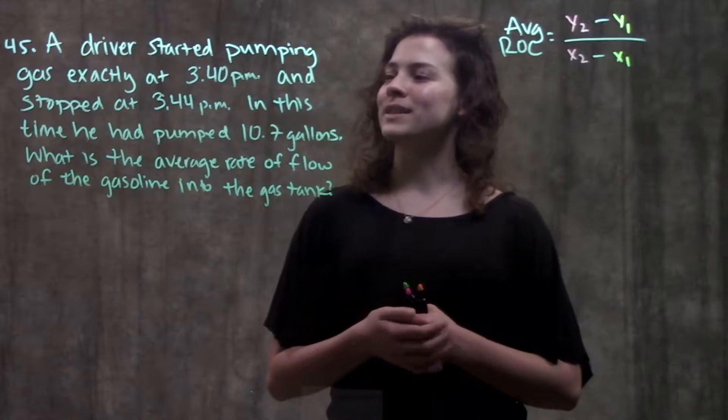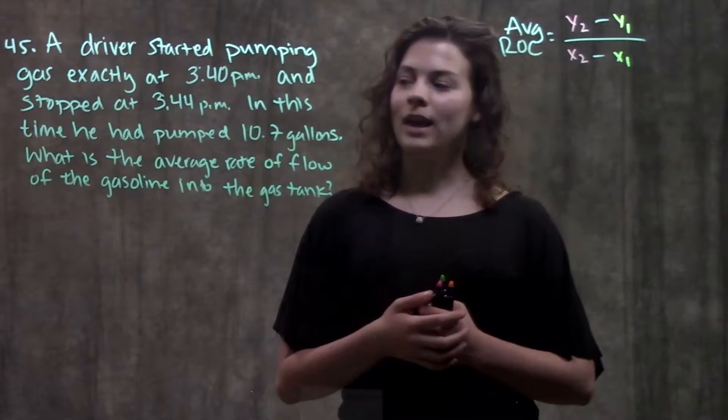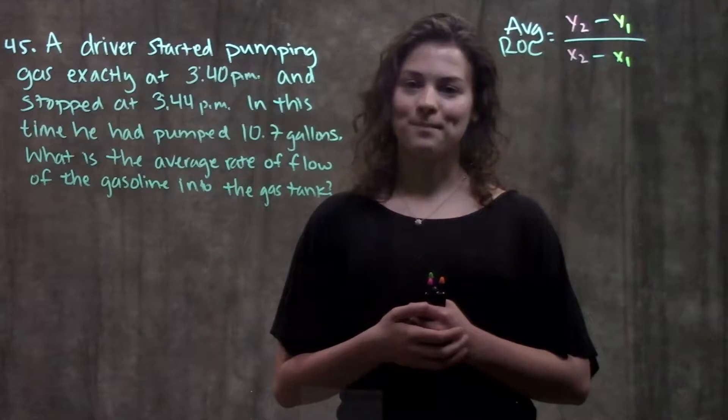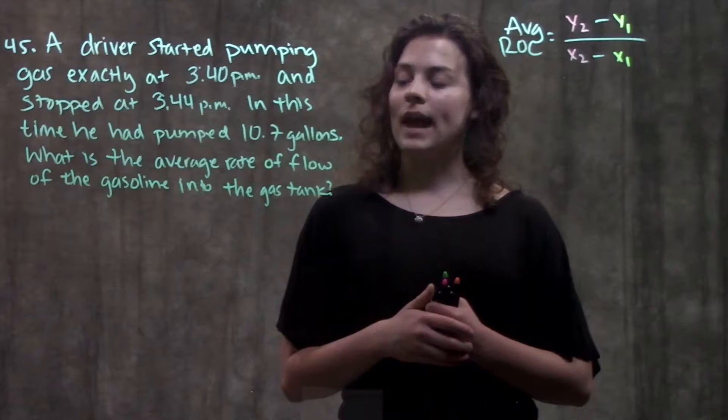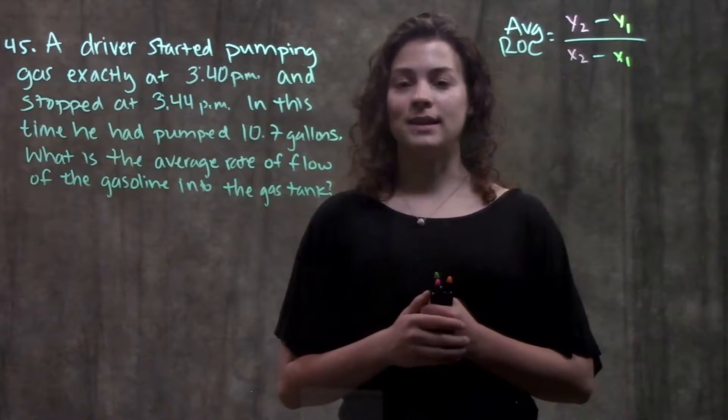So 45 tells us that a driver started pumping gas exactly at 3:40 and stopped at 3:44 p.m. In this time, he had pumped 10.7 gallons. What is the average rate of flow of the gasoline into the gas tank?